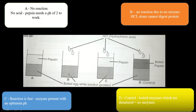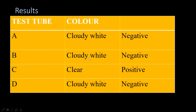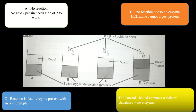In test tube B, where we have hydrochloric acid plus boiled egg white, we are still getting a negative reaction. The reason is that there is no enzyme in test tube B. What you have is just protein plus hydrochloric acid. Hydrochloric acid alone cannot digest protein. To digest protein we need both hydrochloric acid and pepsin working on the protein. Because there is no reaction, test tube B remains cloudy white — a negative reaction.